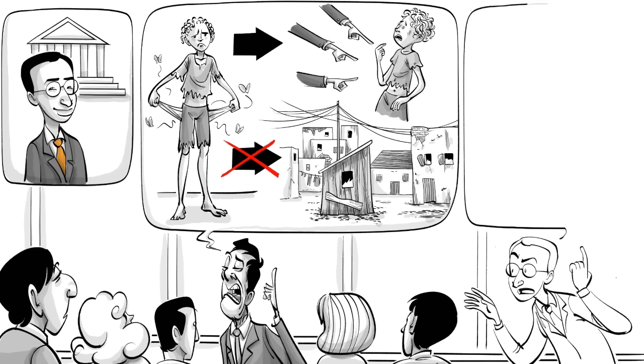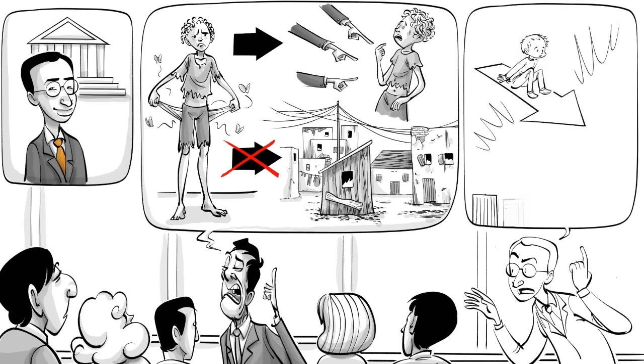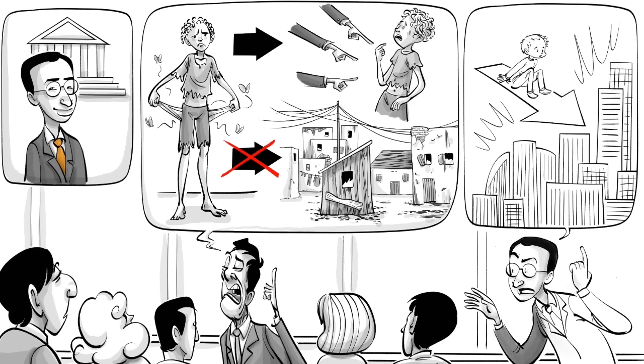The psychologist, Yuri Bronfenbrenner, wanted to change that and convince the world that to help those less fortunate, we also needed to change their surroundings. But did he succeed?